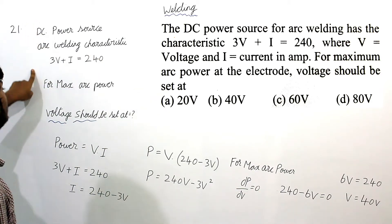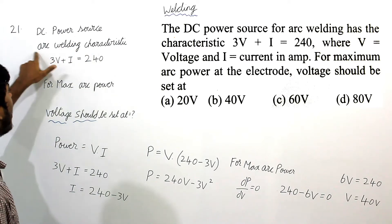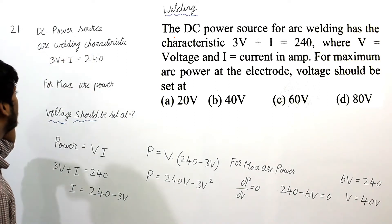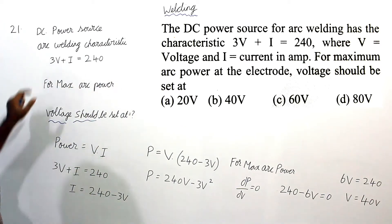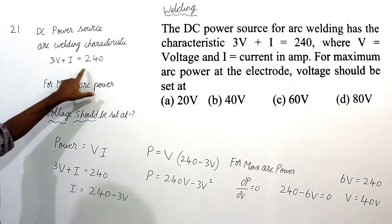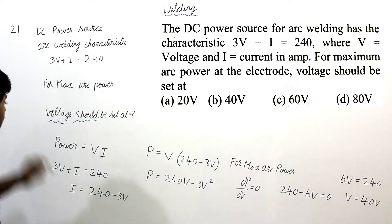The given information is a DC power source for arc welding with the characteristic equation 3V + I = 240, where V is voltage and I is current.